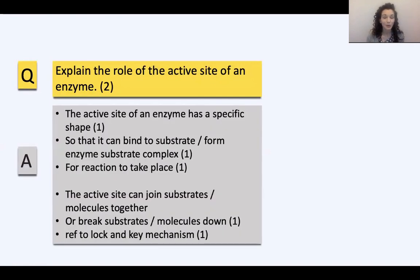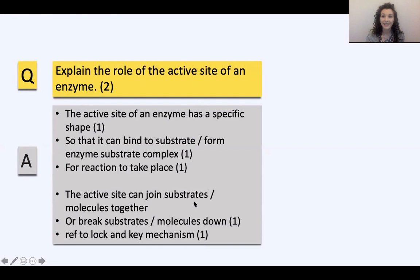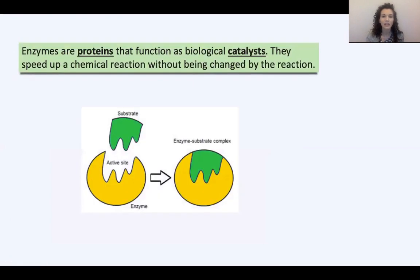There are lots of possible points for this. The active site of an enzyme has a specific shape — we can also call that a complementary shape — so that the substrate can fit inside it. The active site has a specific shape so it can bind to a substrate or form an enzyme-substrate complex, so that a reaction can take place. You could mention the active site joining substances together or breaking them apart. The lock-and-key mechanism is a name for this illustration — the active site acts like the lock and the substrate is the key that fits inside it.